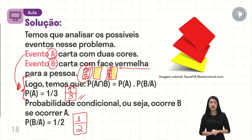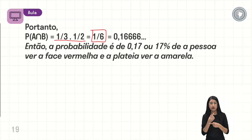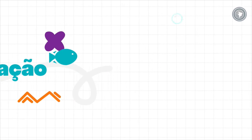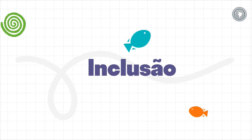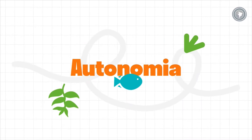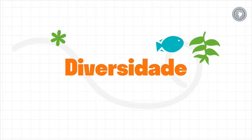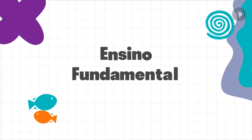Agora que eu tenho esses resultados, vou fazer a multiplicação entre eles: 1 sobre 3 vezes 1 sobre 2 vai ficar 1 sobre 6. Multiplicando por 100, eu tenho 17% de possibilidade de retirar a carta que ele pediu no problema. Então, essa foi a nossa aula. Espero que tenham compreendido melhor a probabilidade. Eu vejo vocês numa próxima aula.